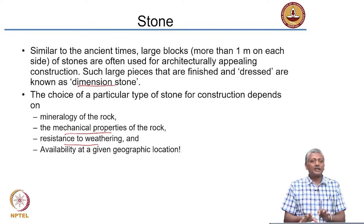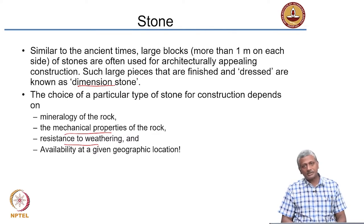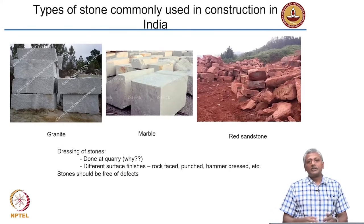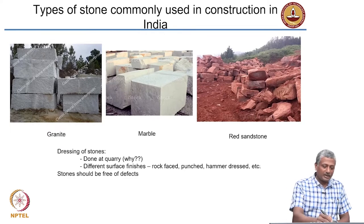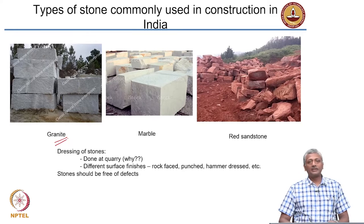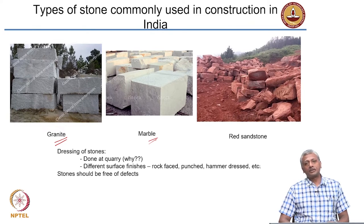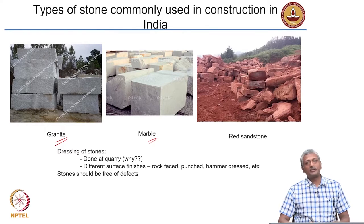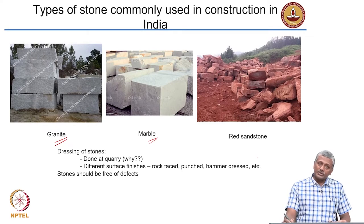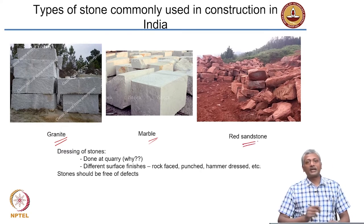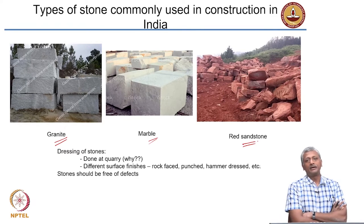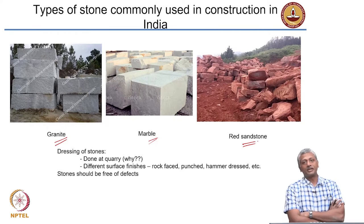As an engineer, you still need to look at the material properties — mechanical properties and resistance to weathering — before deciding whether the material is suitable. Typically in India, you see large amounts of structures made with granite, especially in southern India. You also have marble, a popular material available in the northern parts of the country like Rajasthan, popularly used for monumental structures and temples. Forts and historic monuments are often built with red sandstone, highly available in the northern parts of the country.